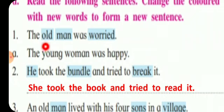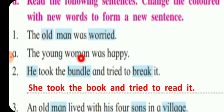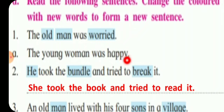It is given: 'The old man was worried.' We have to change 'old,' 'man,' and 'worried.' So instead of 'old' we write 'young,' and instead of 'man' we write 'woman' — 'The young woman was worried.' Worried means she was disturbed, so we have written she was happy.